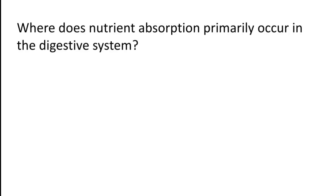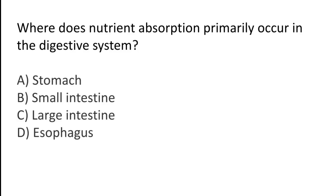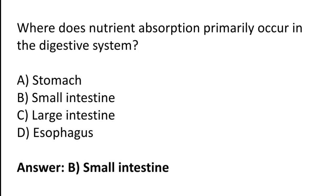Where does nutrient absorption primarily occur in the digestive system? Option A: Stomach. Option B: Small intestine. Option C: Large intestine. Option D: Esophagus. The correct answer is Option B — nutrient absorption primarily occurs in the small intestine.